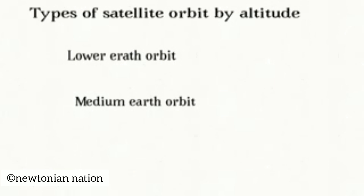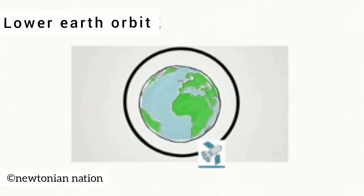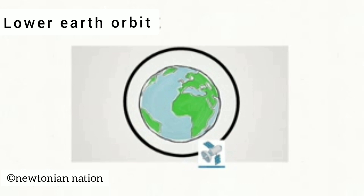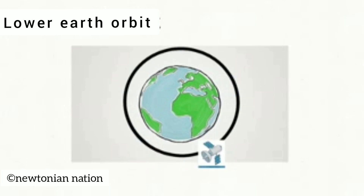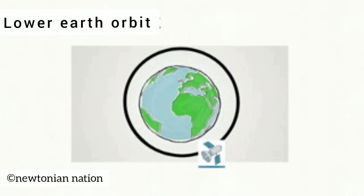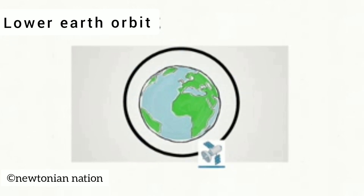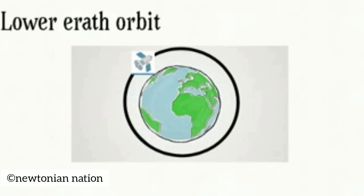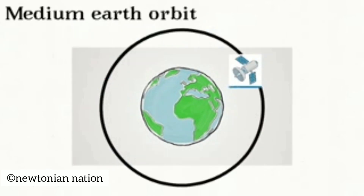Types of satellite by altitude: Lower Earth Orbit, Medium Earth Orbit, and Geostationary Earth Orbit. Lower Earth Orbit lies between 160 to 2000 km above, and it takes approximately 90 to 120 minutes to circle the earth.